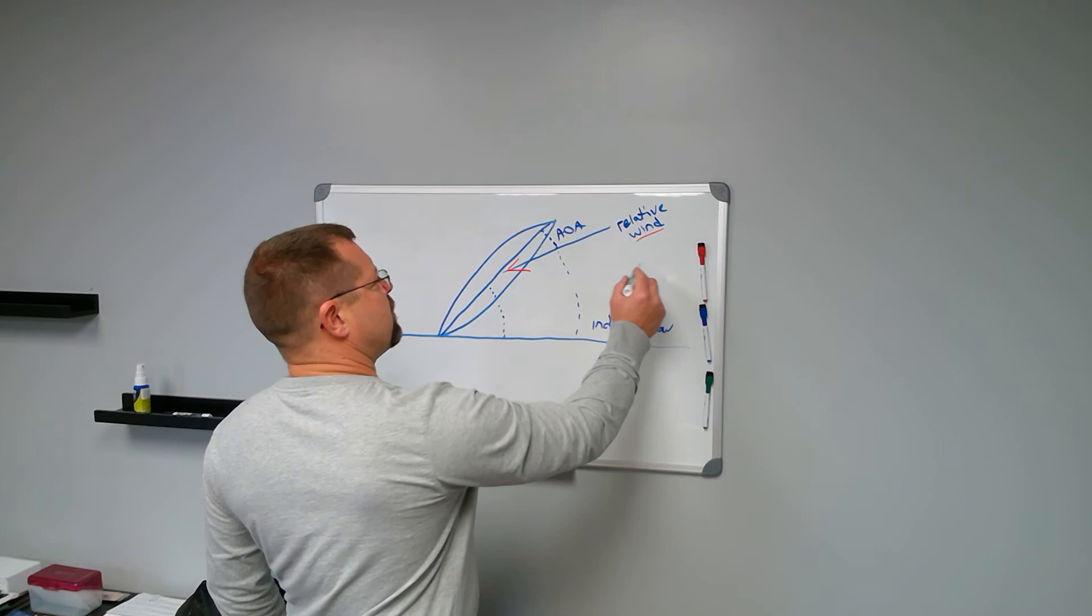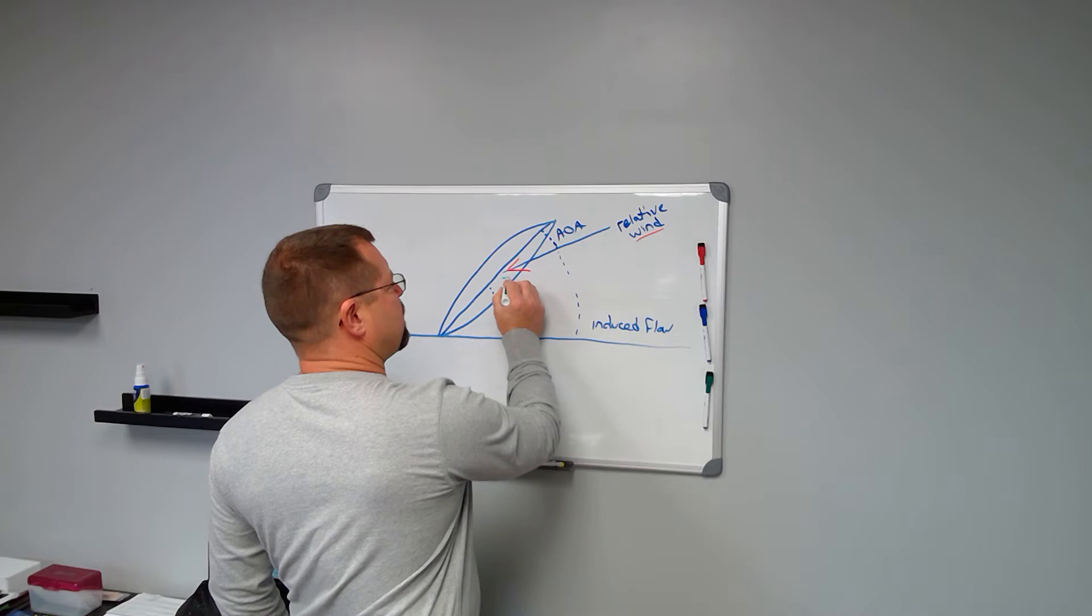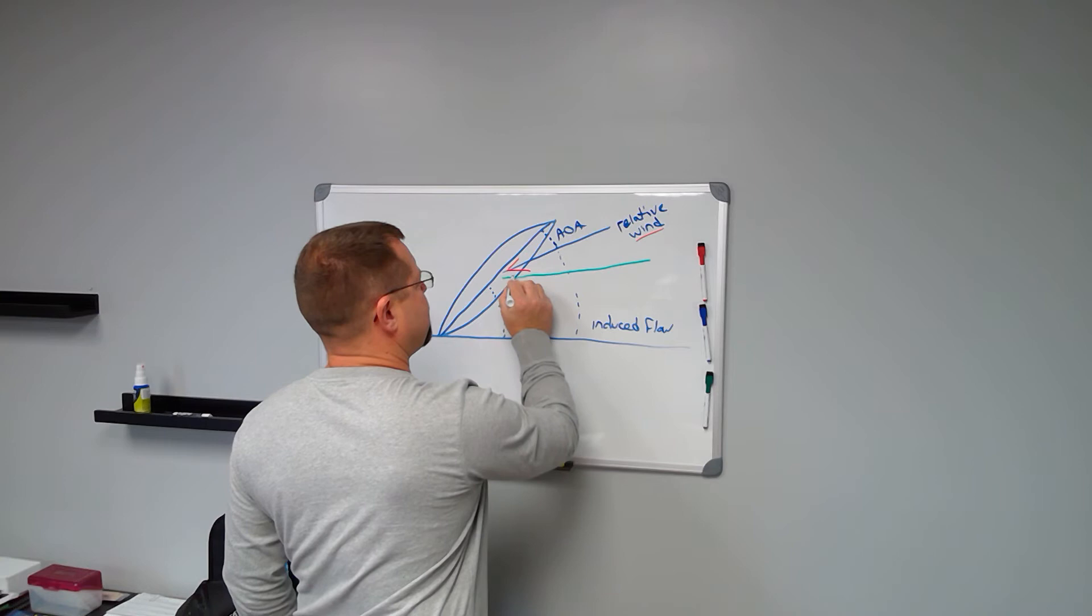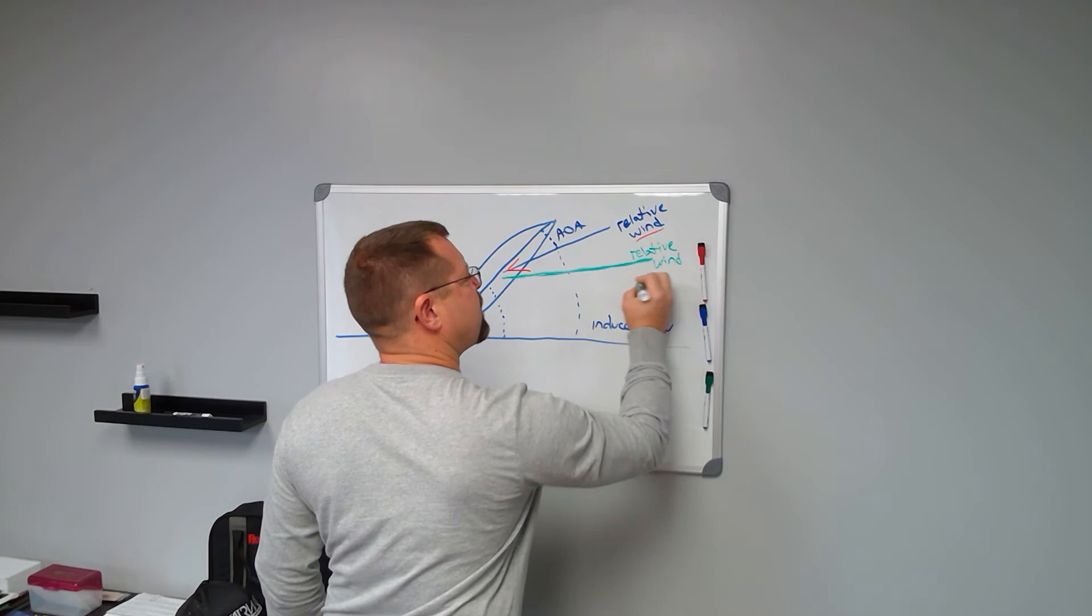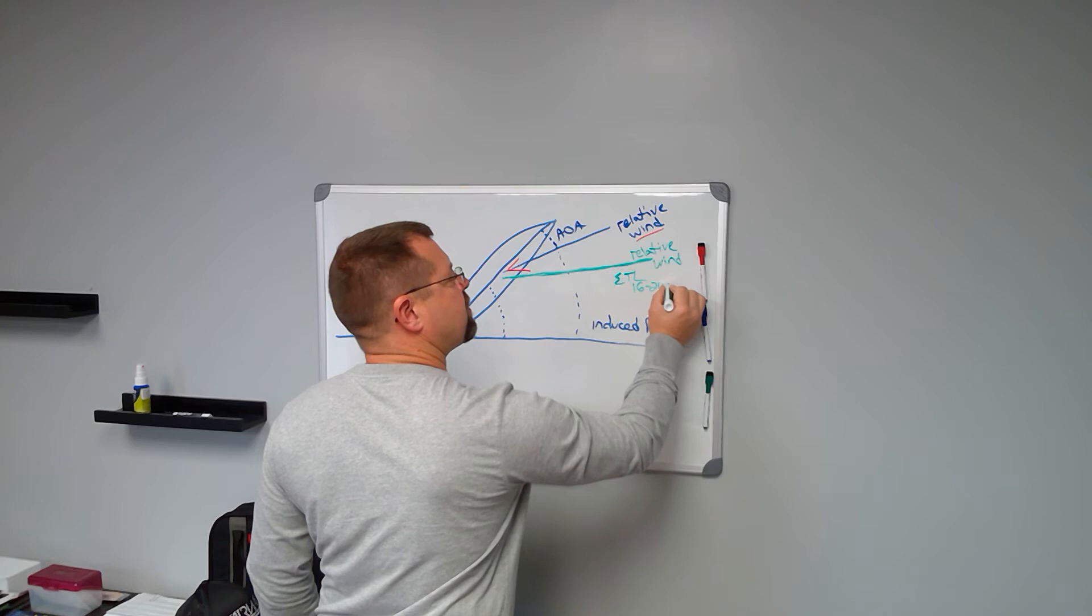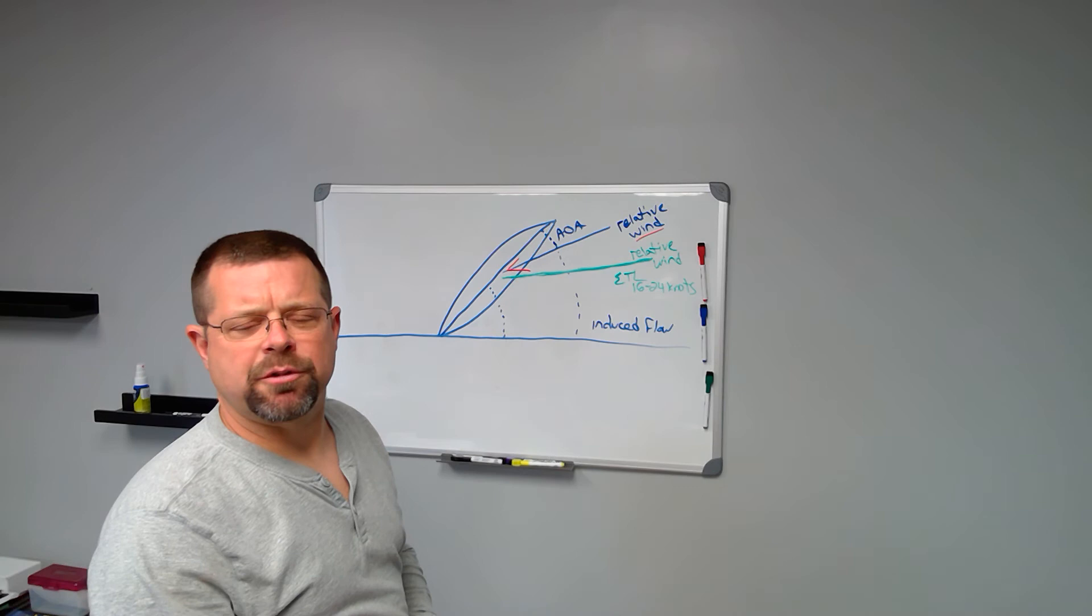So let's put another angle in here that represents the relative wind in forward flight as you reach 16 to 24. ETL, 16 to 24 knots according to the helicopter flying handbook.